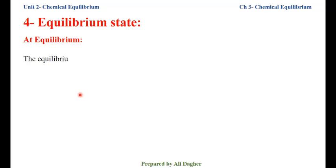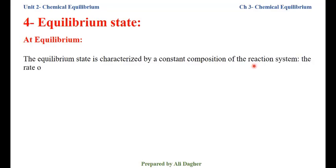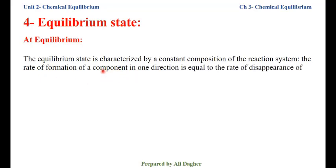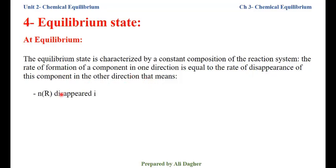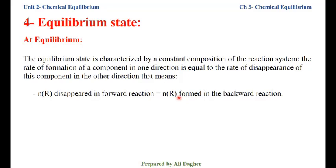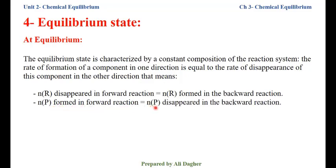At equilibrium, the equilibrium state is characterized by a constant composition of the reaction system. Why? Because the rate of formation of a component — whether reactant or product — in one direction is equal to the rate of disappearance of that component in the other direction. That means the number of moles of reactant disappearing in the forward reaction equals the number of moles of that same reactant formed in the backward direction. And the number of moles of product formed in the forward reaction equals the number of moles of product disappearing in the backward direction.